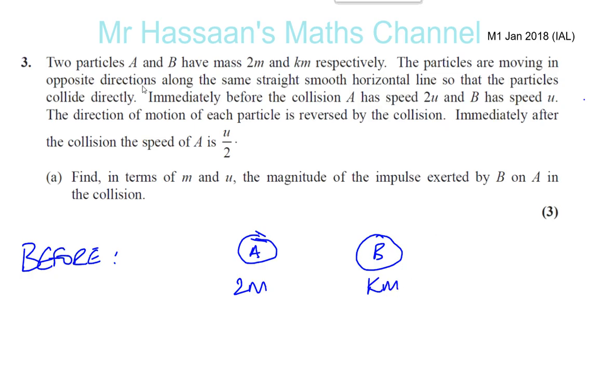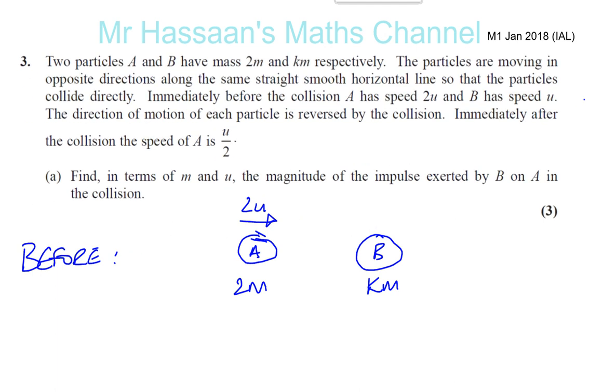And B has mass km. The particles are moving in opposite directions along the same straight, smooth horizontal line so that the particles collide. So A is moving in this direction with a speed of 2u. And B is moving in the opposite direction with a speed of u. This is before the collision.